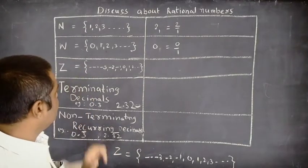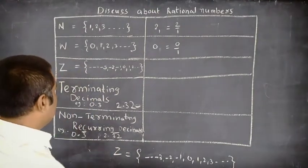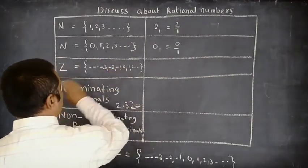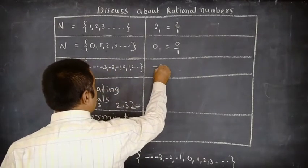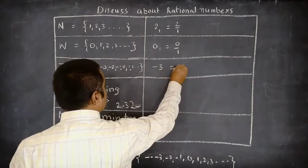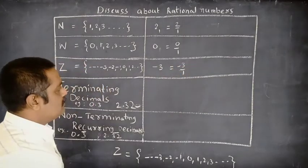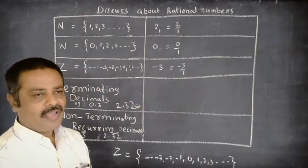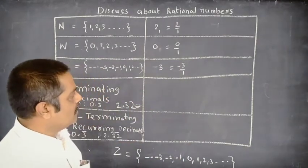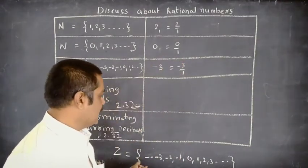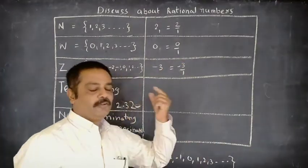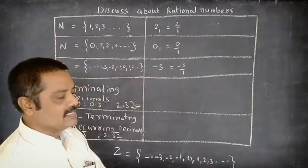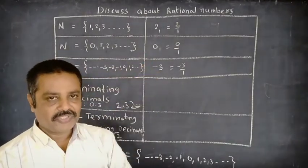Next, select any number from integers. For example, take -3. We can write -3 as -3/1. It is also in the form P/Q, Q is not equal to 0, and both numbers are present in the group of integers. That is why every integer is a rational number.